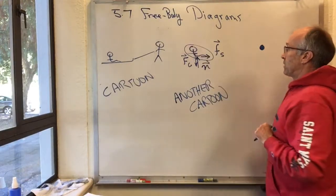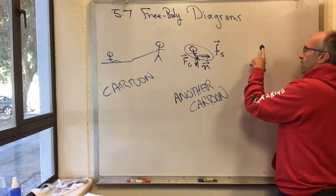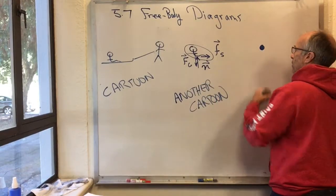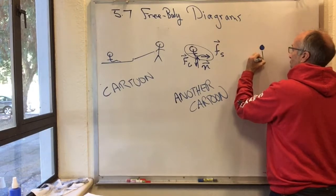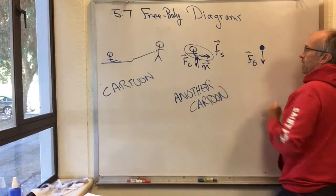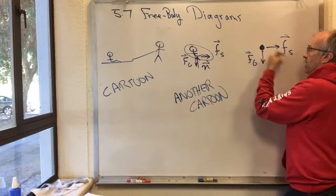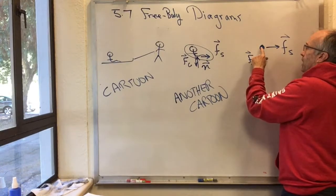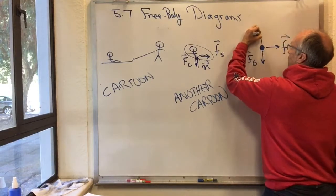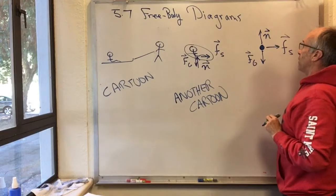The actual subject of this section is free body diagrams. In the free body diagram we model the child as a point. By convention, we put the tails of the vectors affecting the child on that point. F sub G points downward, F sub S pulls forward if the child is accelerating, and the normal force points upward — all with their tails placed at the point representing the child.